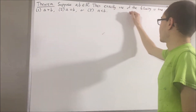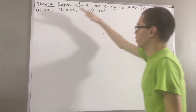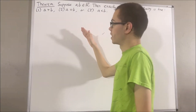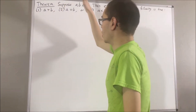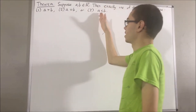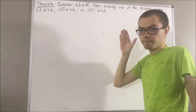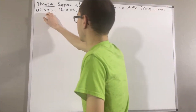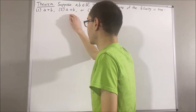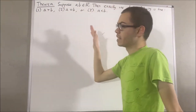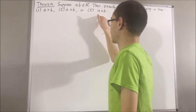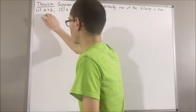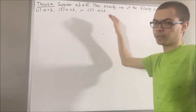Now, to say exactly one of the following is true is shorthand for saying A is greater than B, or A is equal to B, or A is less than B; and it is not the case that A is greater than B and A is equal to B; and it is not the case that A is equal to B and A is less than B; and it is not the case that A is greater than B and A is less than B.